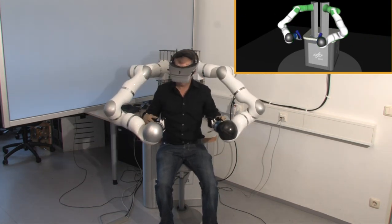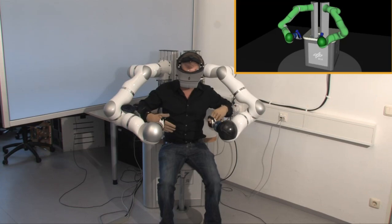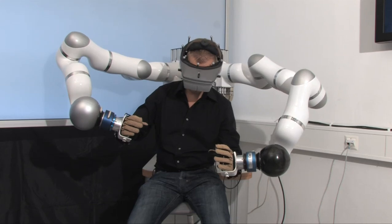Torque and position sensors are integrated in each joint, enabling both impedance and admittance control. Different hand interfaces can be attached to the robots.